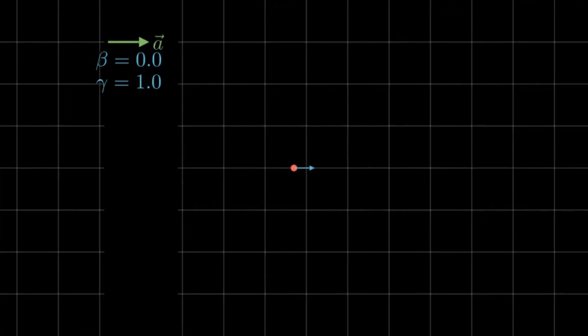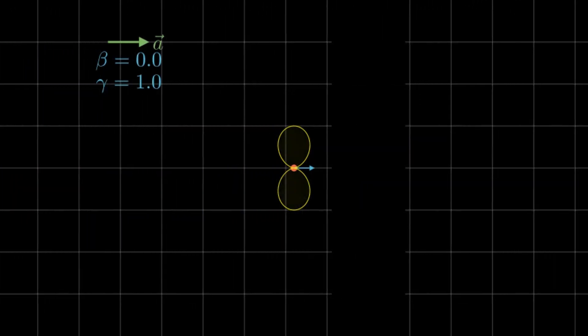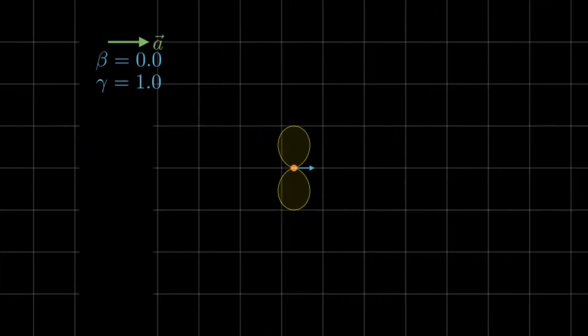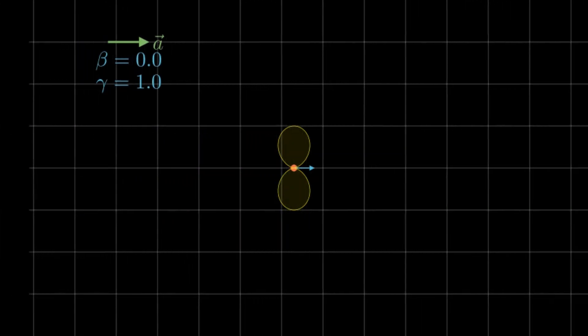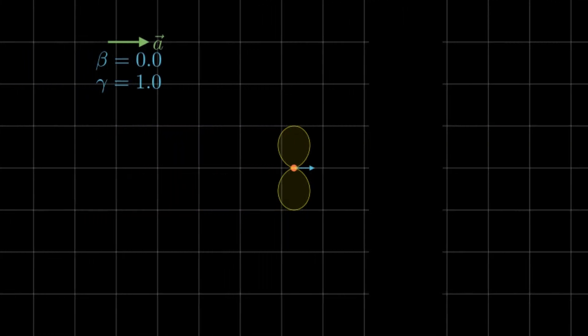Now this radiation is pure dipole radiation, shown by the yellow contours. The further out the contour is, the more intense the radiation in that direction. Therefore, most of the radiation is emitted perpendicular to the acceleration.